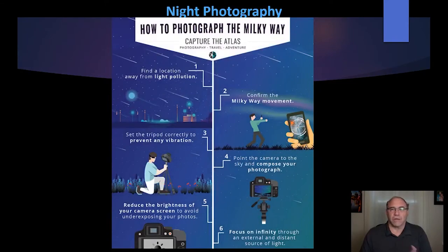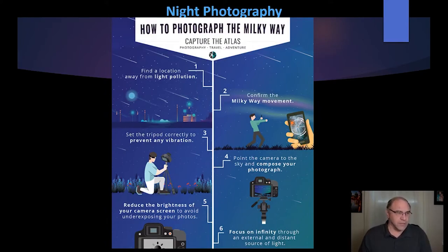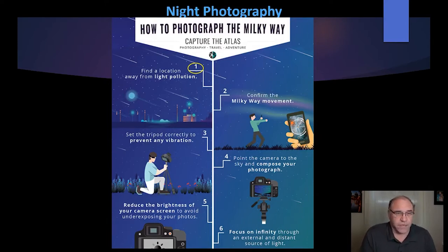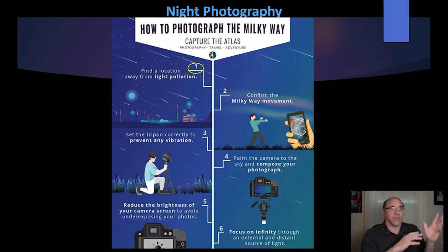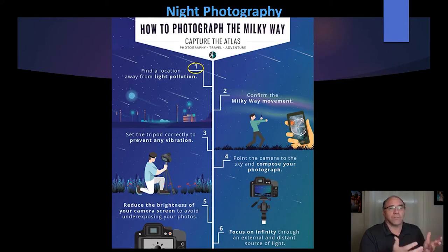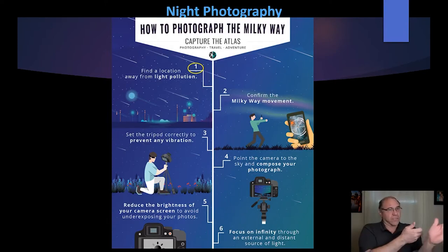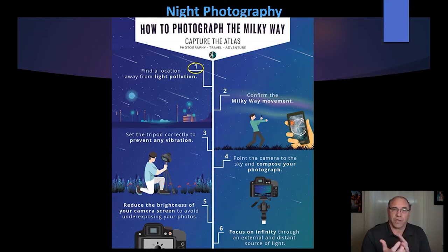In general, the quick workflow is: first, find a location with the lowest light pollution possible. Set up your tripod, and confirm with something like PhotoPills or Photographer's Ephemeris which way the Milky Way is going to be. Where is it physically located? Do this ahead of time as much as possible. Most of these apps have an augmented reality mode where you can hold your phone up and see where the Milky Way will be crossing the horizon, helping with your composition.